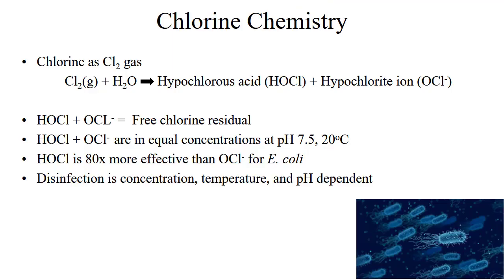There are several chemicals that can be used to inject chlorine into the water. One option is chlorine gas, which is Cl2. When chlorine is added to water, hypochlorous acid (HOCl) and hypochlorite ion (OCl-) are formed. The combination of hypochlorous acid and the hypochlorite ion is the free chlorine residual. This reaction is pH-dependent, and at a pH of 7.5, the concentration of hypochlorous acid and the hypochlorite ion are equal.